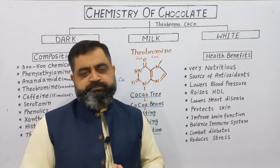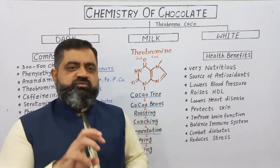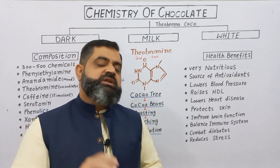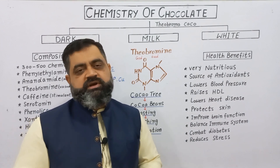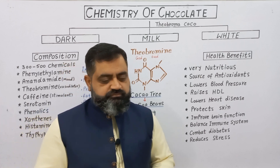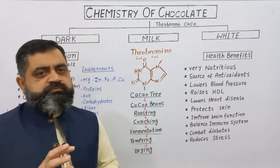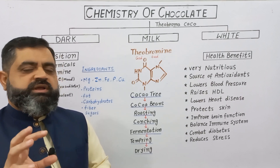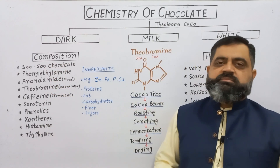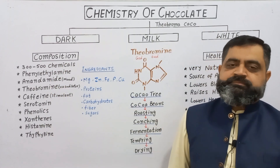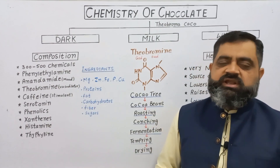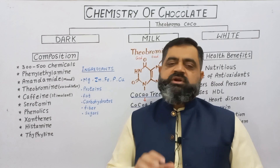Milk chocolate, due to the presence of milk and sugar, has less amount of cocoa powder. White chocolate does not contain any cocoa powder — rather it contains cocoa butter or cocoa milk. Chocolate contains very important chemicals; around 300 to 500 chemicals are present in cocoa powder.